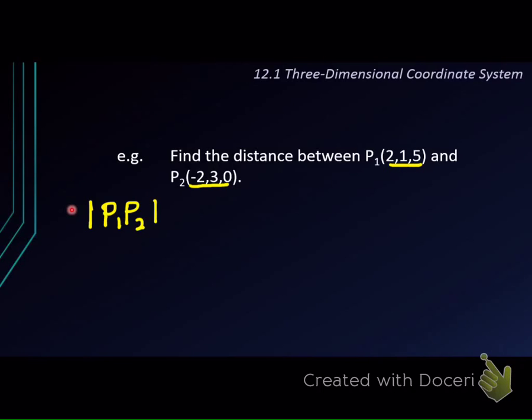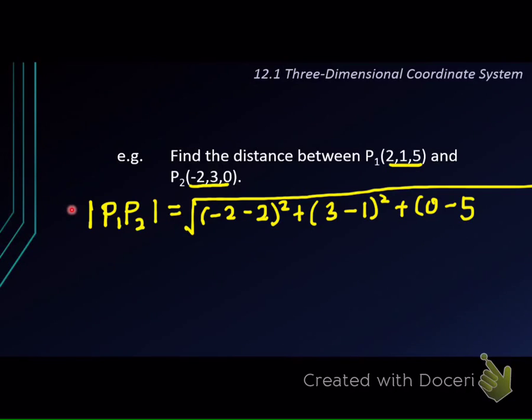Okay, so to find the distance, first let's draw out the square root. We'll take x2 minus x1, that is -2 minus 2 squared, plus 3, y2 minus y1, 3 minus 1 squared, plus 0 minus 5 squared.